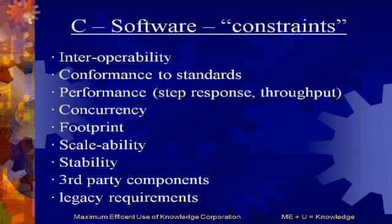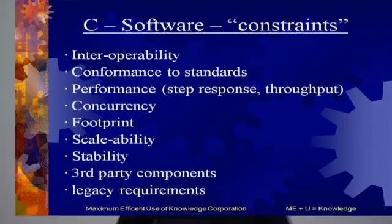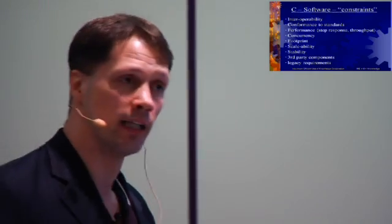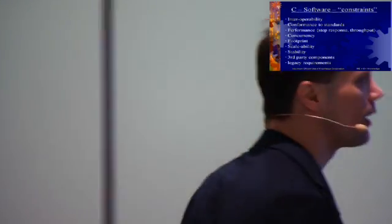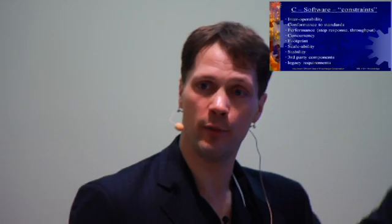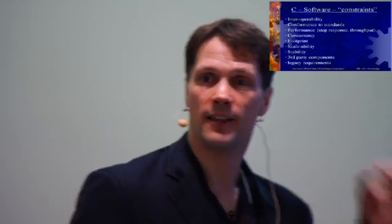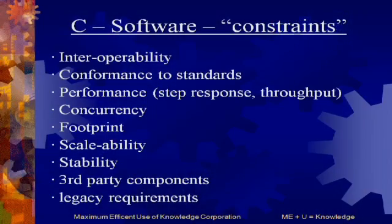Concurrency — now with multi-core processors you're running transactions concurrently, which can create all kinds of problems: threading, deadlocks, race conditions. If you're dealing with those, it's typically eligible for SR&ED credits. The footprint itself — how much memory do you use — again gives us nice quantifiable parameters we're looking for. Scalability, stability, use of third-party or legacy components.